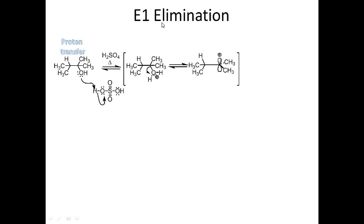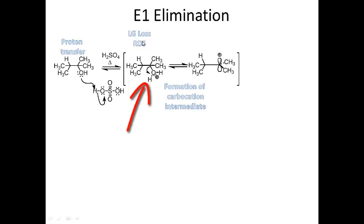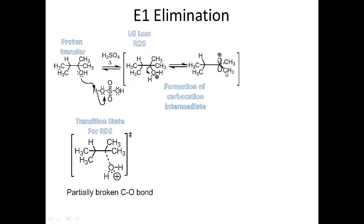Now I'm forming this hydronium ion intermediate, and then I lose my leaving group — that's what this arrow is depicting here. That's my rate-determining step, and I form a carbocation intermediate. Let's look at the transition state for the rate-determining step, which is loss of water — the loss of my leaving group.